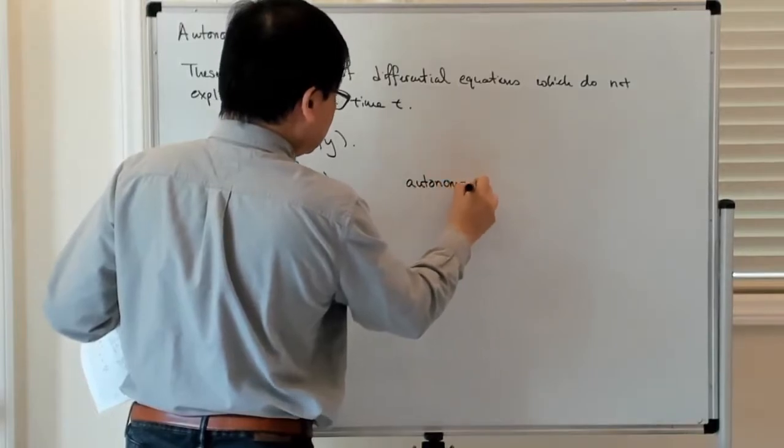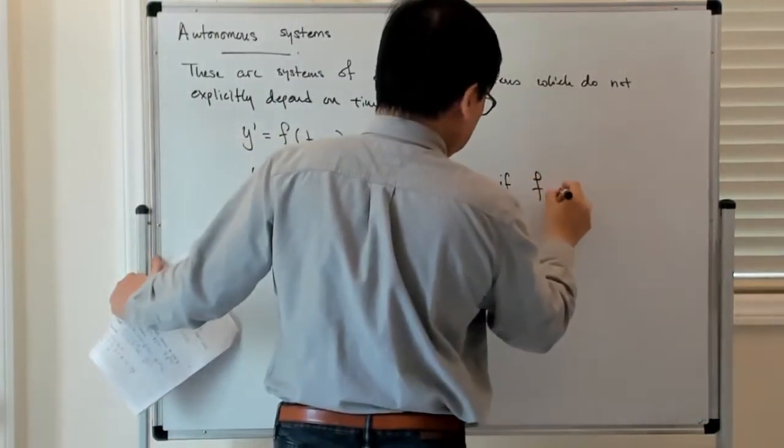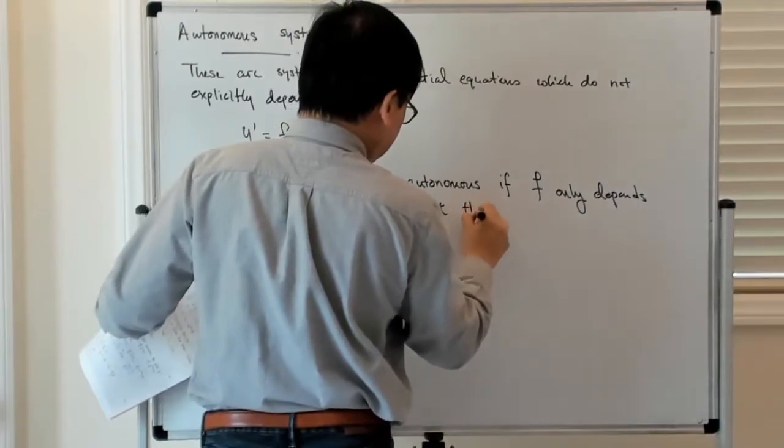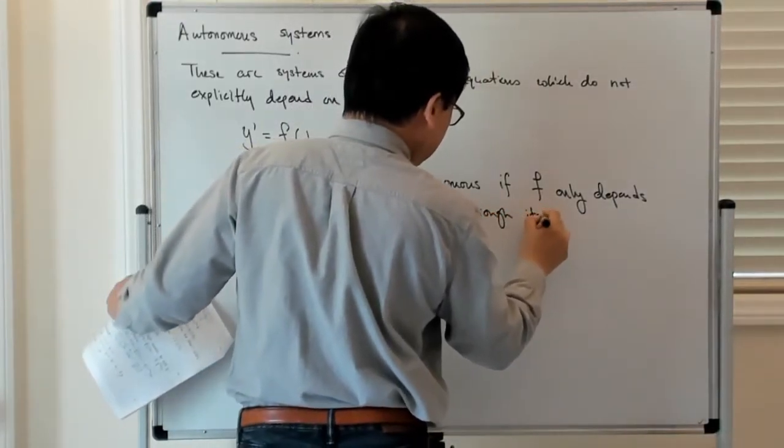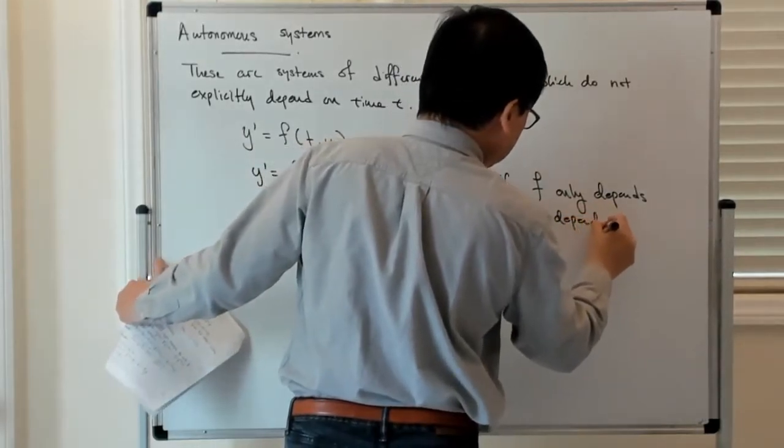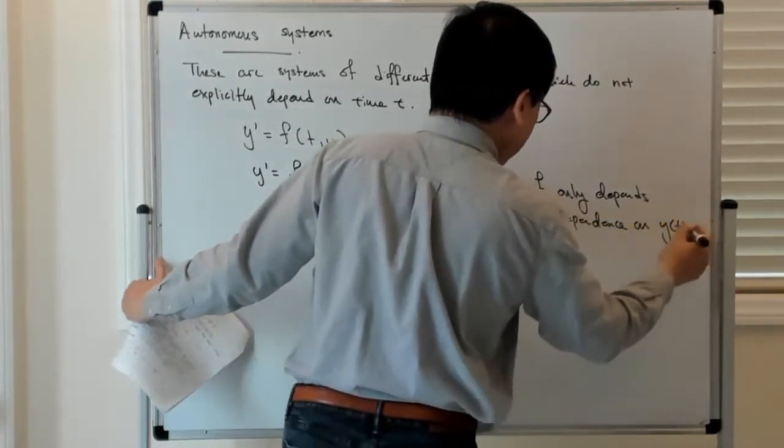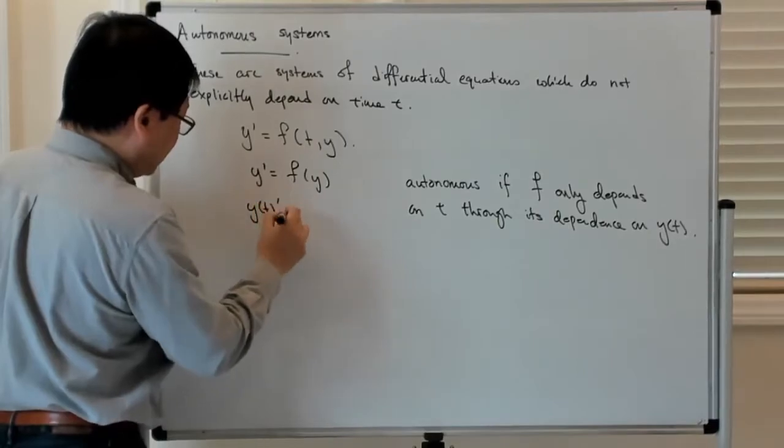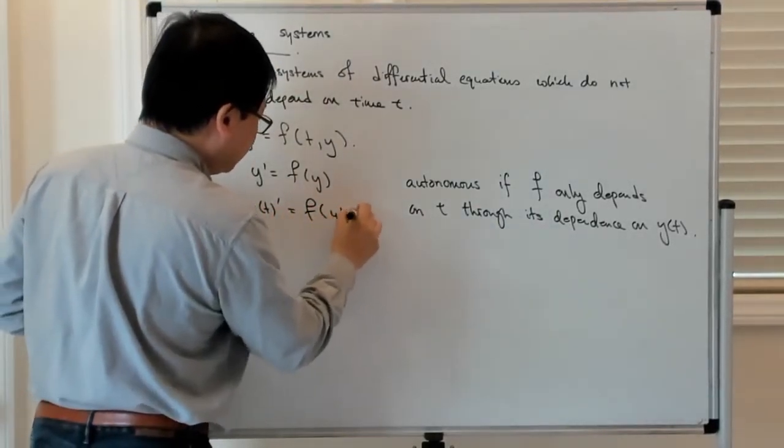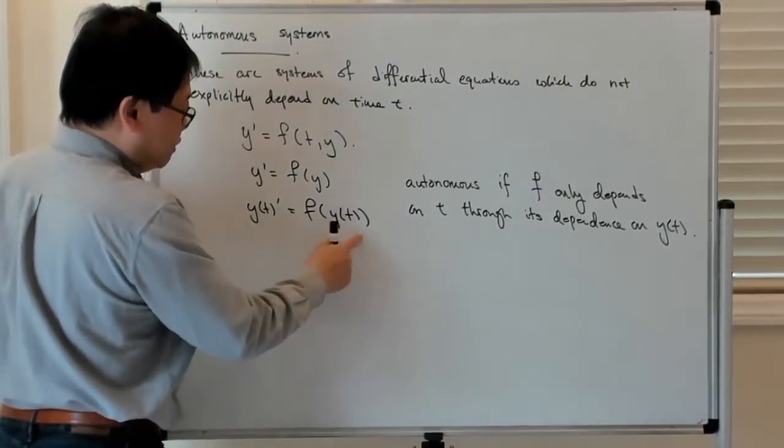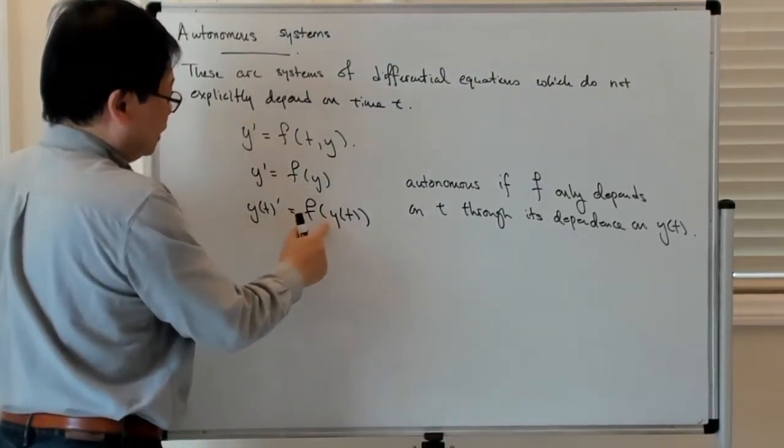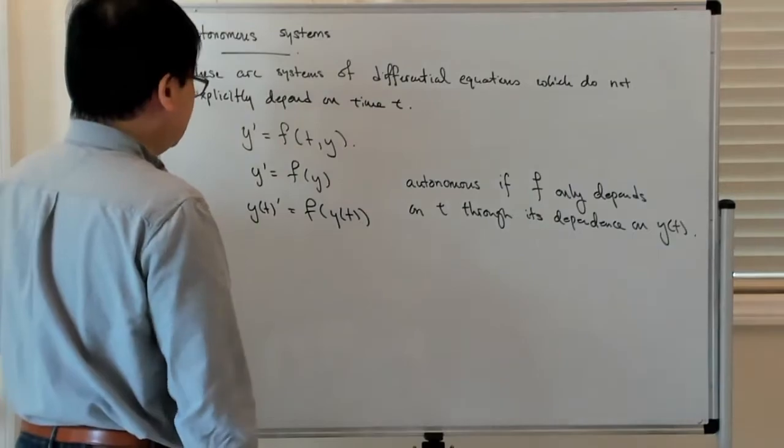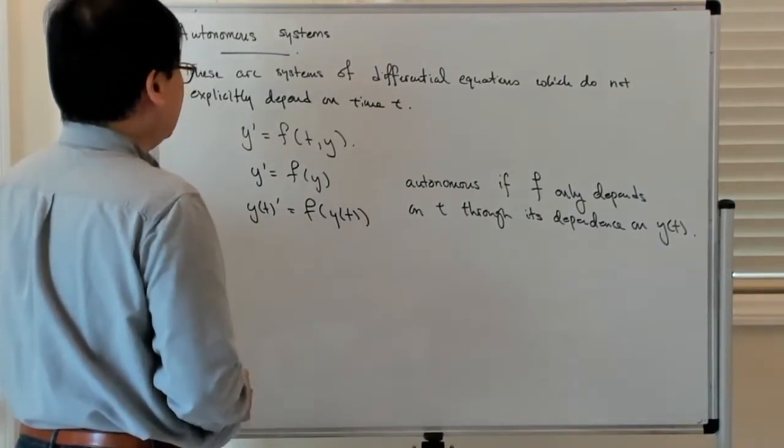So this is autonomous if f only depends on t through its dependence on y of t. Maybe we should write this more explicitly: y(t) prime is equal to f of y(t). There's an implicit dependence on time because y depends on time, but f itself doesn't contain t except through this y dependence. So that's what we mean by autonomous.